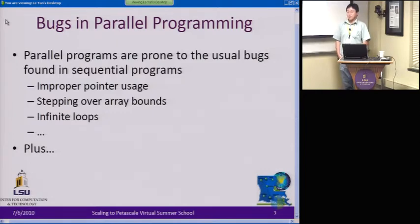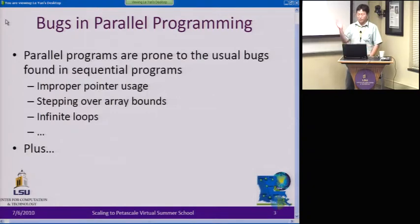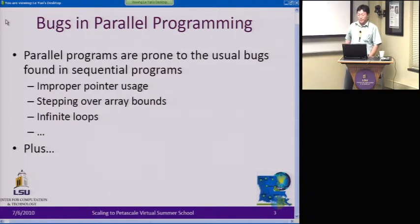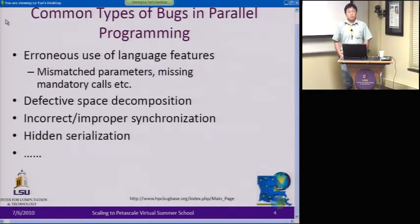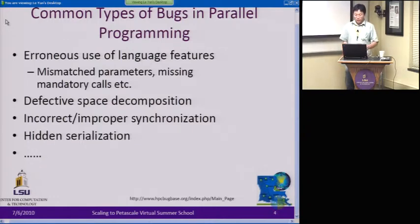Whenever you write a program, there's the possibility you have bugs in it. For parallel programs, there's no exception — you can have all the bugs you could have in a serial program. That includes memory problems from improper pointer usage, or step errors like stepping over bounds. In addition, if you are new to MPI or OpenMP, you might miss a mandatory call or have mismatched parameters like the tag to a message sent from one process to another.